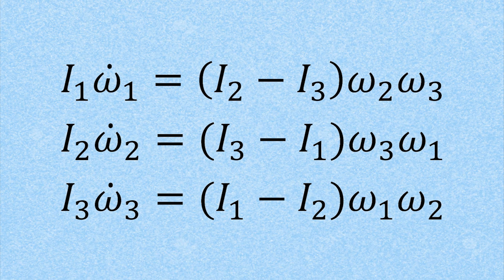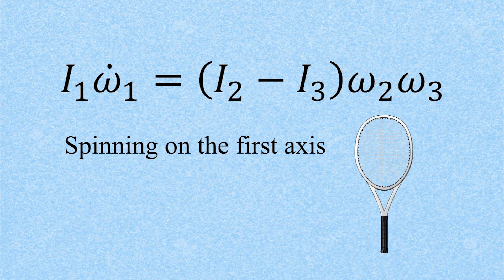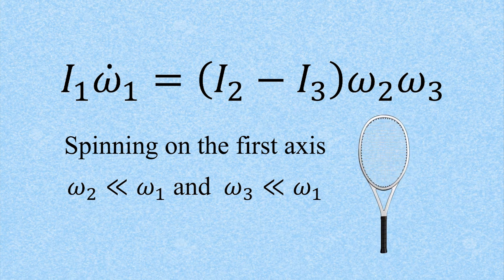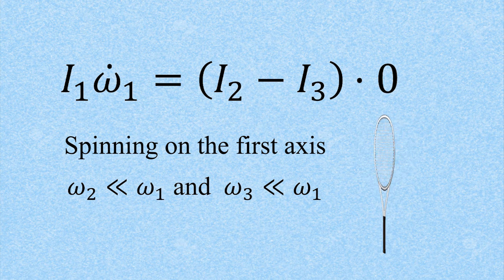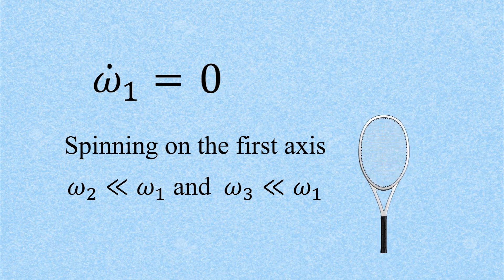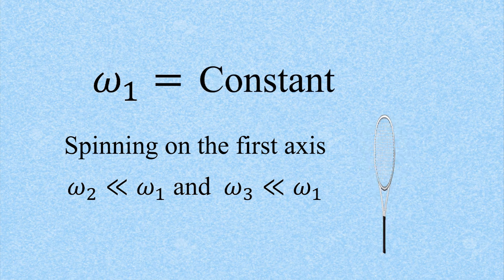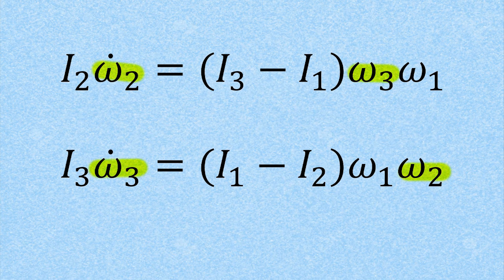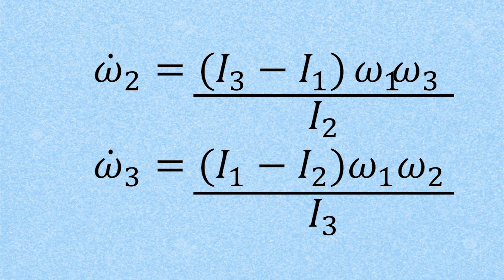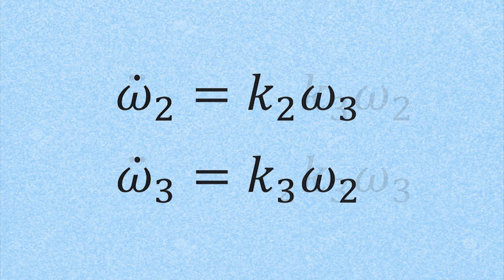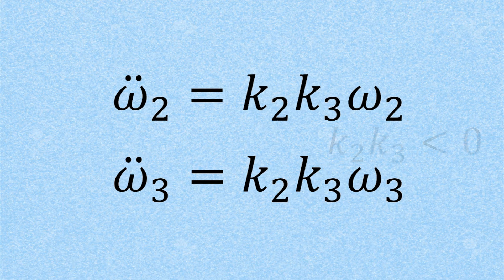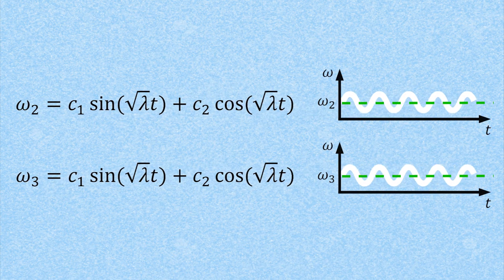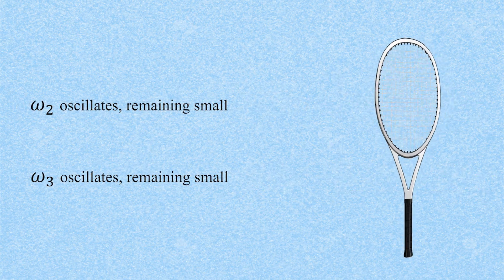Before understanding how these equations work with the second axis, let's look at the first — bring back our racket and consider it spinning along the first axis. Since the racket was spun on its first axis, the angular velocities for the other two axes are quite small by comparison, so we can consider omega-2 and omega-3 as essentially zero. This makes the left-hand side null, and since the moments of inertia are constant, the time derivative of omega is null, implying the angular velocity along the first axis is constant. Going back to the other two equations with omega-1 constant, we isolate the time derivatives of omega-2 and omega-3 and replace all the constants with a lowercase k. The second derivatives are proportional to their respective omegas, and k2 times k3 is always less than zero. Solving this equation shows that omega oscillates, meaning omega-2 and omega-3 will perpetually oscillate around their original values, remaining small and never disturbing the rotation along the first axis.